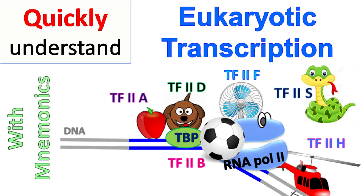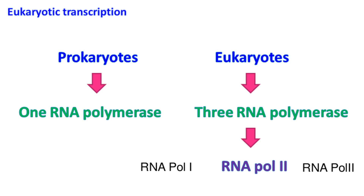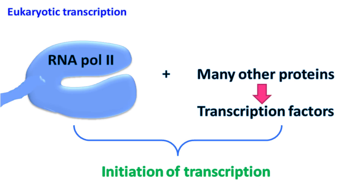Hello everyone, Grigby Chemistry Basics here. Let's talk about eukaryotic transcription. The enzyme required for transcription is RNA polymerase. Prokaryotes have only one RNA polymerase enzyme while eukaryotes have three. RNA polymerase II is the major enzyme involved in transcription of mRNA in eukaryotes. RNA polymerase II along with proteins known as transcription factors are required for the initiation of transcription.